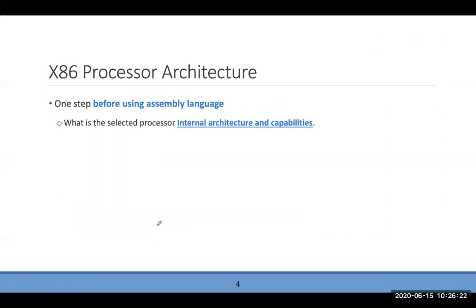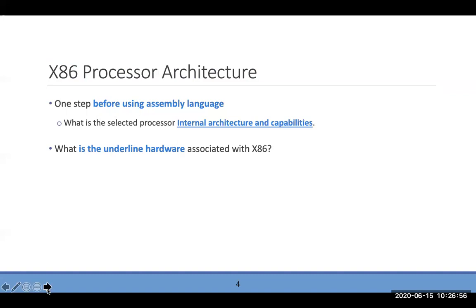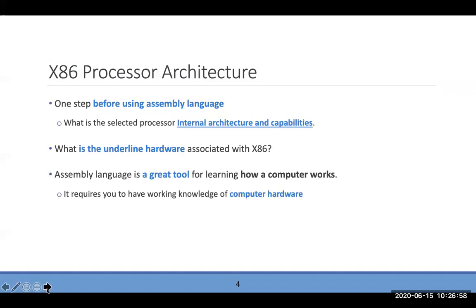Before using assembly language — unlike C, Java, or Python — you can't ignore the architecture. When you download a high-level language you choose your OS and the installer figures out the configuration. But that's not the case with assembly. You must know your underlying architecture, so we need to spend time understanding the hardware related to x86.